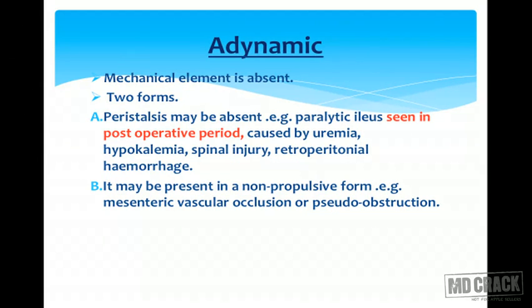In adynamic obstruction, the mechanical element is absent. It can be seen in two forms: where peristalsis is absent, for example paralytic ileus, which is seen most commonly in postoperative periods, or it can be caused by uremia, hypokalemia, spinal injuries, or retroperitoneal hemorrhage.